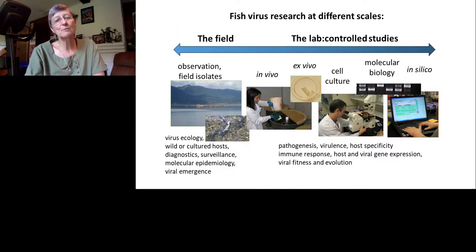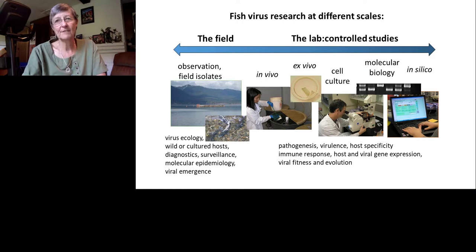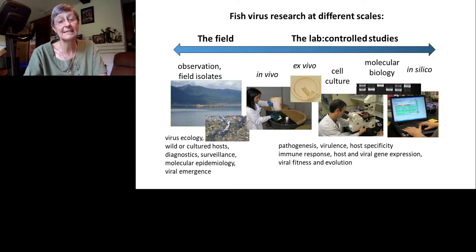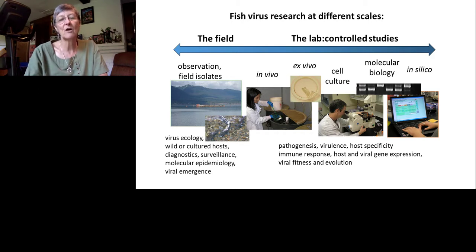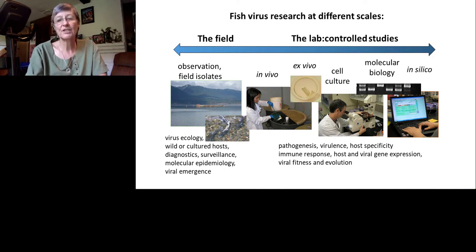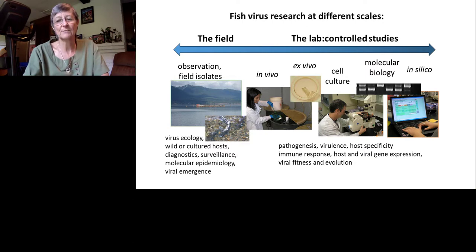Our research program starts with field observation, since our purpose is to understand virus populations as they occur in nature. Fish health agencies — tribal, state, and federal — have conducted surveillance for pathogens since the 1970s. We do molecular epidemiology, study viral emergence events, make hypotheses, and then test them in the lab using in vivo fish studies, ex vivo fish tissues, fish cell lines, and molecular biology. We study pathogenesis, virulence, host specificity, immune response, gene expression, and viral fitness and evolution.